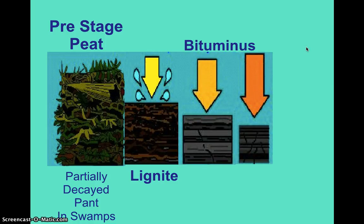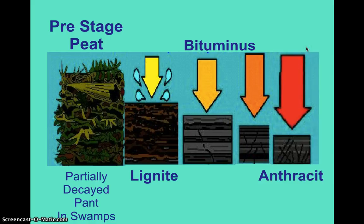The second stage of coal is bituminous. You see two possible stages there — sometimes they reference one as sub-bituminous. And then you have anthracite, which is the last stage of coal.